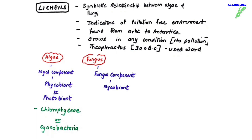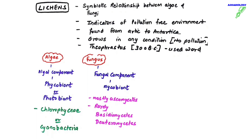The fungal component of the lichen is called mycobionts, where 'myco' means fungus. The most common type of fungus seen in association with lichens is Ascomycetes. Rarely we find Basidiomycetes and Deuteromycetes. These are the two components of lichens — the algae and the fungus.